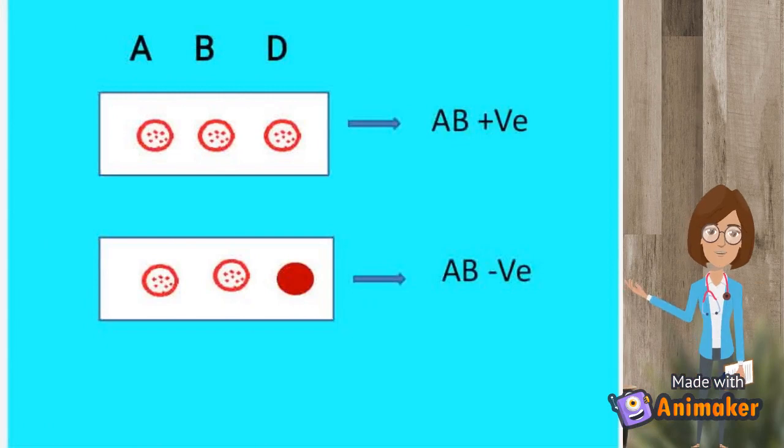In the above one, agglutination in all three confirms it as AB positive. In the below slide, agglutination in the A and B suggests it as AB negative.